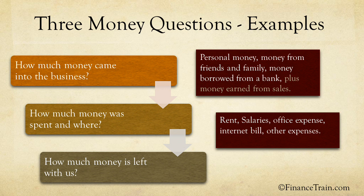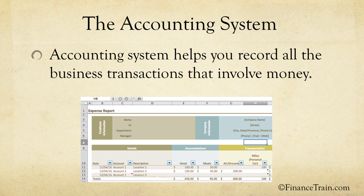The job of tracking all these transactions can be made easy with the help of a suitable accounting system. An accounting system is simply a system that helps you record the business transactions that involve money. It helps you classify and allocate cash into different activities and resources, which in turn helps you answer the three questions about money and make sound decisions. Activities that do not involve money are not a part of the accounting system.